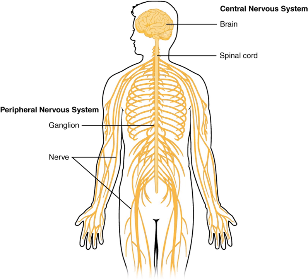The spinal cord reaches from the base of the skull, continues through or starting below the foramen magnum, and terminates roughly level with the first or second lumbar vertebra, occupying the upper sections of the vertebral canal.